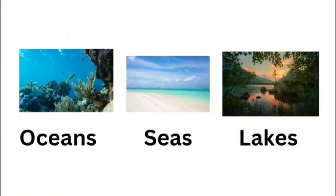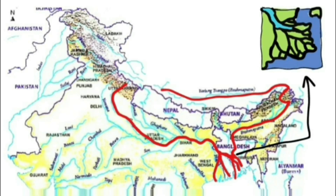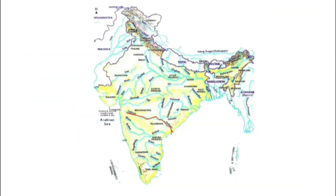Deltas usually occur when a river enters oceans, seas, and lakes. In India we have deltas like the Sundarbans Delta, where the Ganga and Brahmaputra rivers meet. The Sundarbans Delta is home to the Royal Bengal Tigers and is the world's largest and fastest growing delta. We also have deltas like Godavari Delta, Krishna Delta, Mahanadi Delta, and Kaveri Delta.